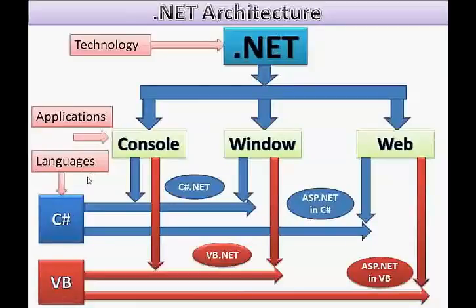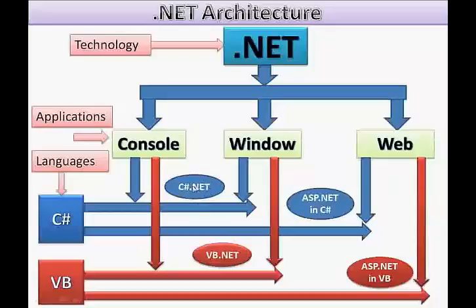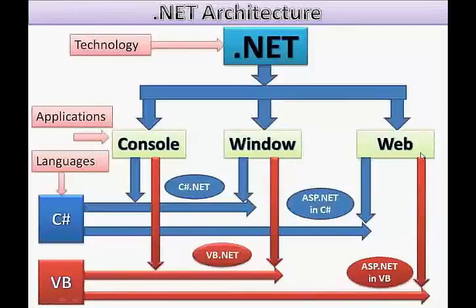Many students are confused about what is C#.NET, what is VB.NET, and what is ASP.NET. To clarify: if you choose console or window as the application type and C# as the language, it becomes C#.NET. If you choose console or window and VB or J# as the language, it becomes VB.NET. If you choose web as the application and C# as the language, it becomes ASP.NET in C#. If you choose web and VB as the language, it becomes ASP.NET in VB.